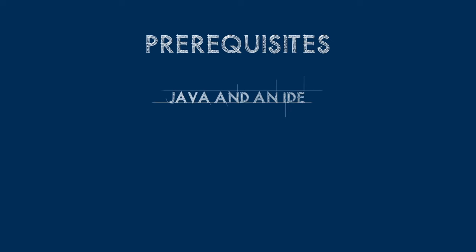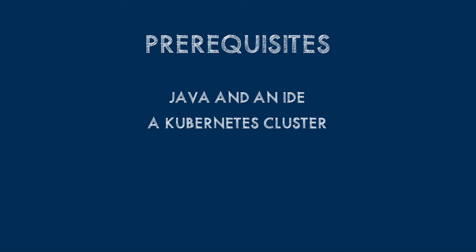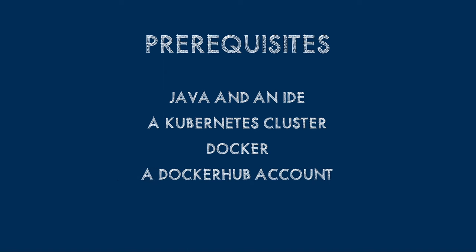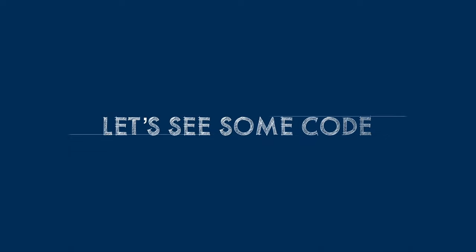Before we get started, a few prerequisites: you'll need Java and a Java IDE — I'll be using Spring Tools on Eclipse. You'll need a Kubernetes cluster; I'm using kind (Kubernetes in Docker), but any cluster should work. You'll also need Docker and the Docker CLI — I'm on macOS using Docker Desktop — a Docker Hub account, and kubectl. I've aliased kubectl to simply 'k' for lazy typing, so when you see me type k, that means kubectl.